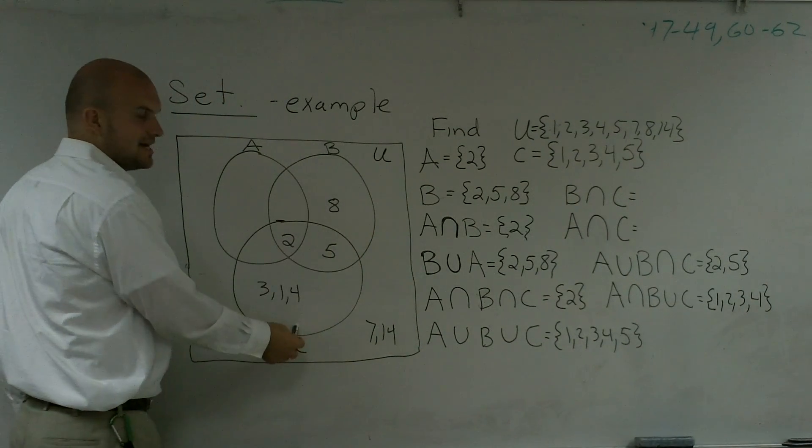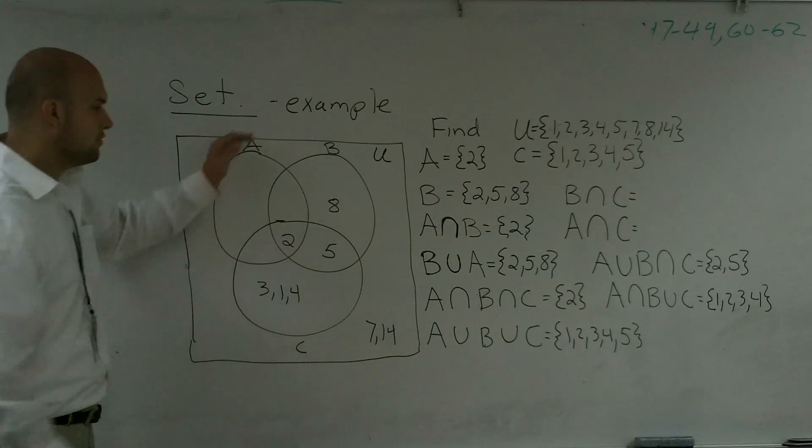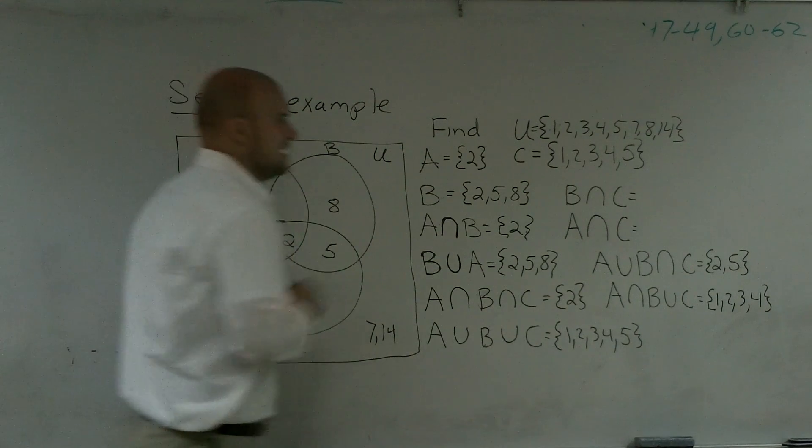So B intersect C is only going to be where these two circles cross. We're not going to be worried about our circle A. So this is going to be B intersect C would be 2 and 5.